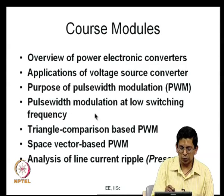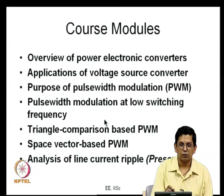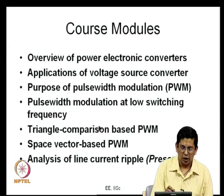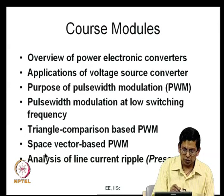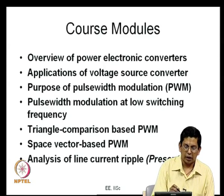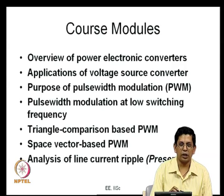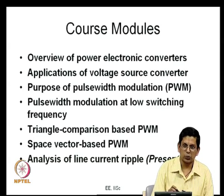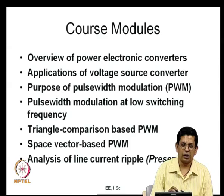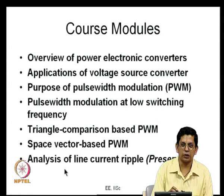Subsequently we went to pulse width modulation at low switching frequency, considering very low switching frequencies such as one or two switching angles in every quarter, and saw how with just two switching angles we can control the harmonics. From that we went on to selective harmonic elimination and offline optimized PWM, and subsequently moved towards real-time PWM — real-time generation of PWM — which is what is most commonly done, at frequencies much higher than the fundamental frequency.